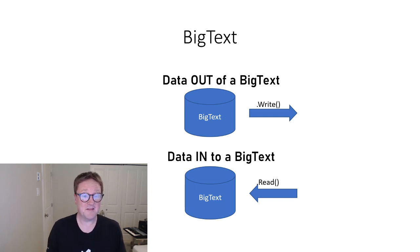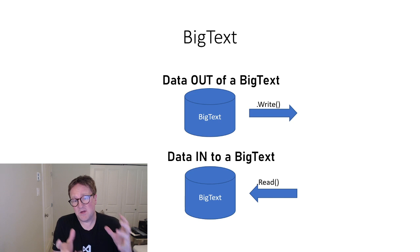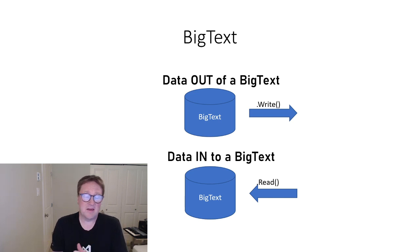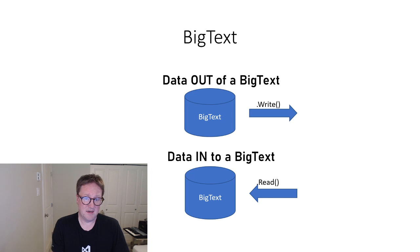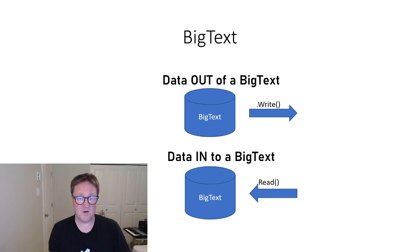The last one in this small list is BigText — that's a hard one to say. If we want to get data out of a BigText, we use Write. And if we want to get data in, we use Read. Confused? Well, I get this wrong all the time, even though I've been using some of these for years.